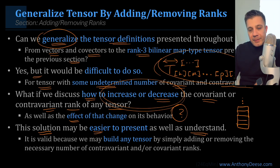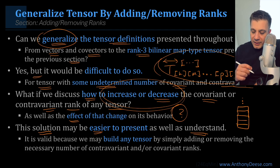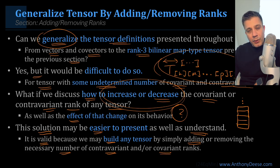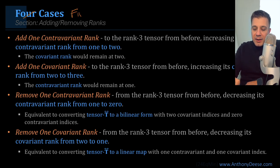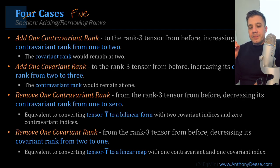We feel that increasing and decreasing the covariant and contravariant ranks may be easier to present as well as understand. It can lead to a more in-depth, natural understanding of tensor generalization. It is valid because we can build any tensor by simply adding or removing the necessary number of contravariant and covariant ranks. That's the only thing separating the primal vector from the dual vector from the linear map — this characterization in terms of number of contravariant and covariant ranks.